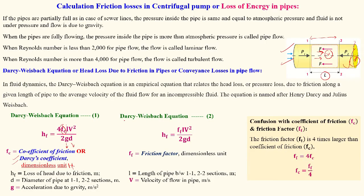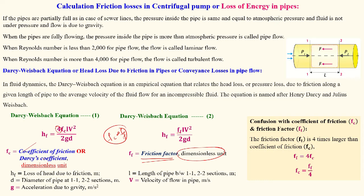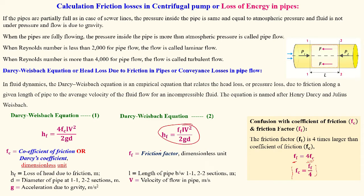Another form of the Darcy-Weisbach equation is: hf = ff·L·V² / (2·g·d). The only difference between these two equations is the factor of 4. Here ff is the friction factor, which is also dimensionless. The relation between fc and ff is: ff = 4·fc, or equivalently fc = ff / 4. Don't confuse these two — ff is the friction factor and fc is the coefficient of friction.